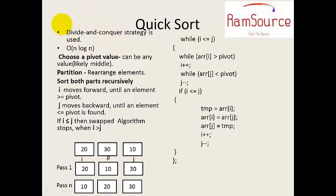That's the divide and conquer approach. The time complexity for divide and conquer based sorting is O(n log n), because the array is split — log n levels of splitting — giving n log n overall.